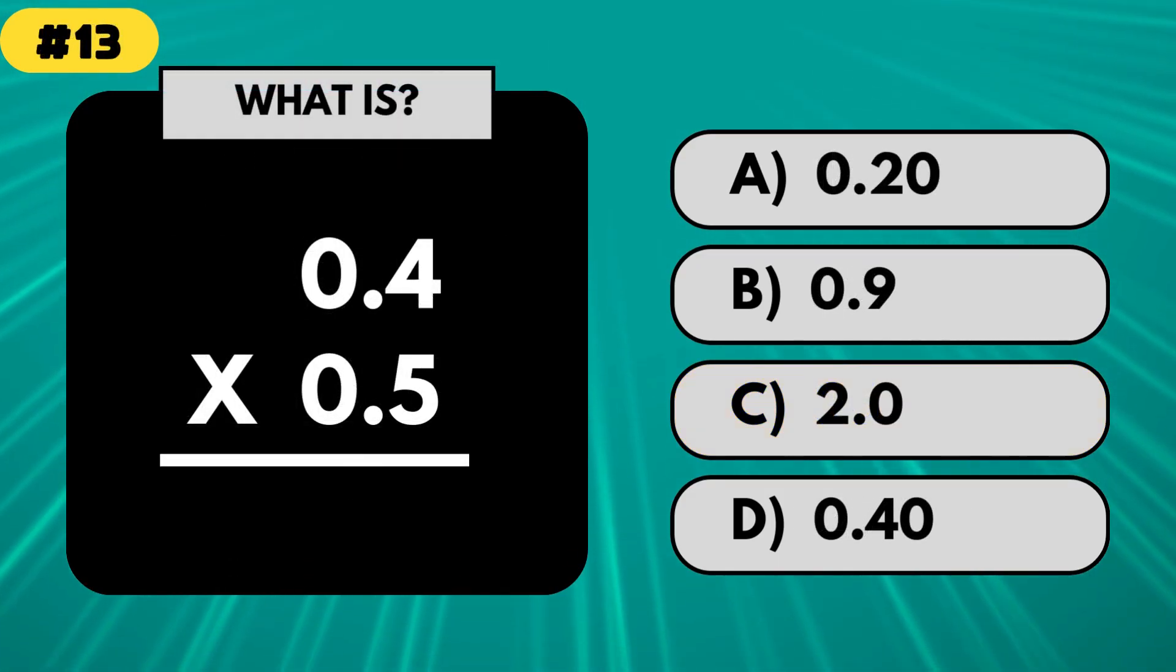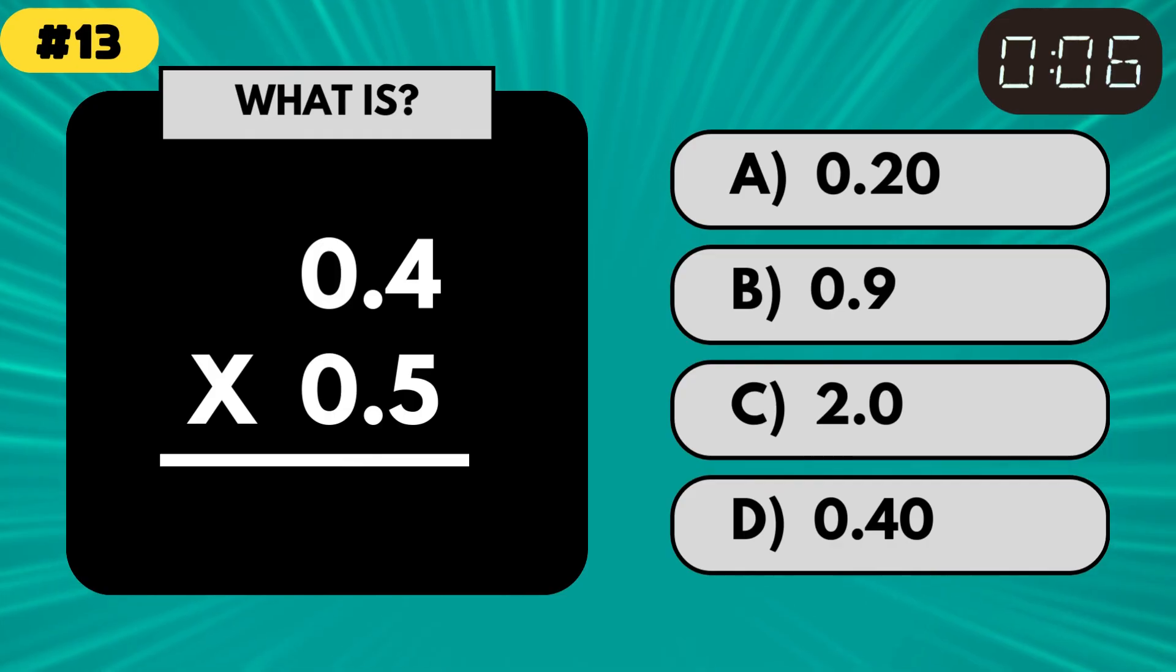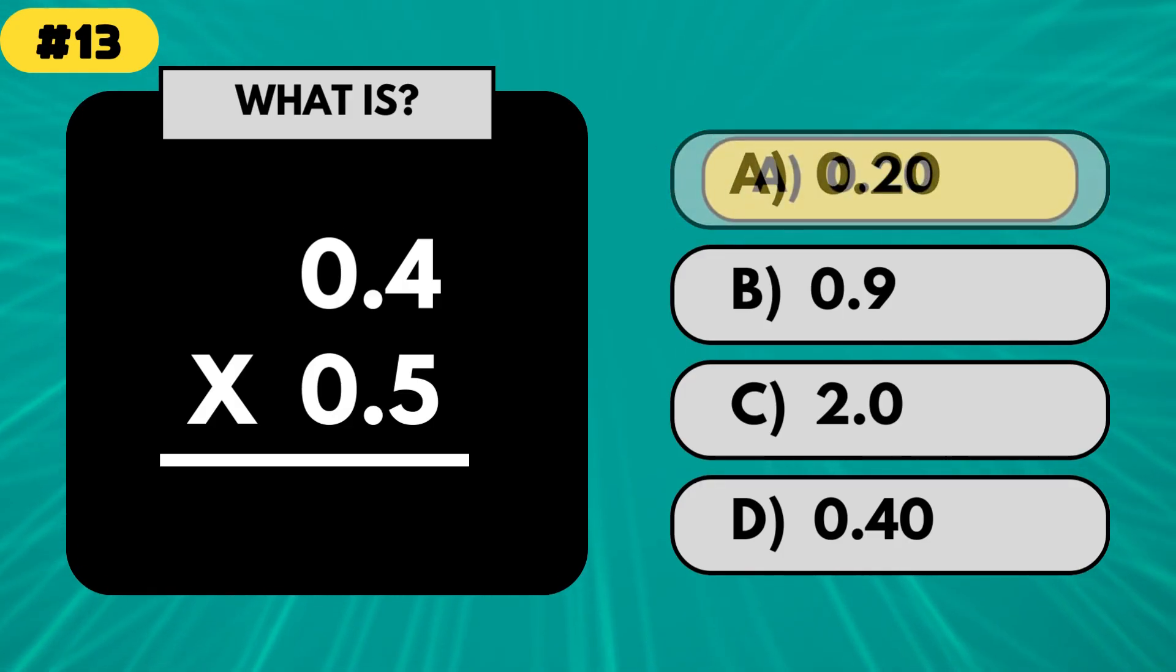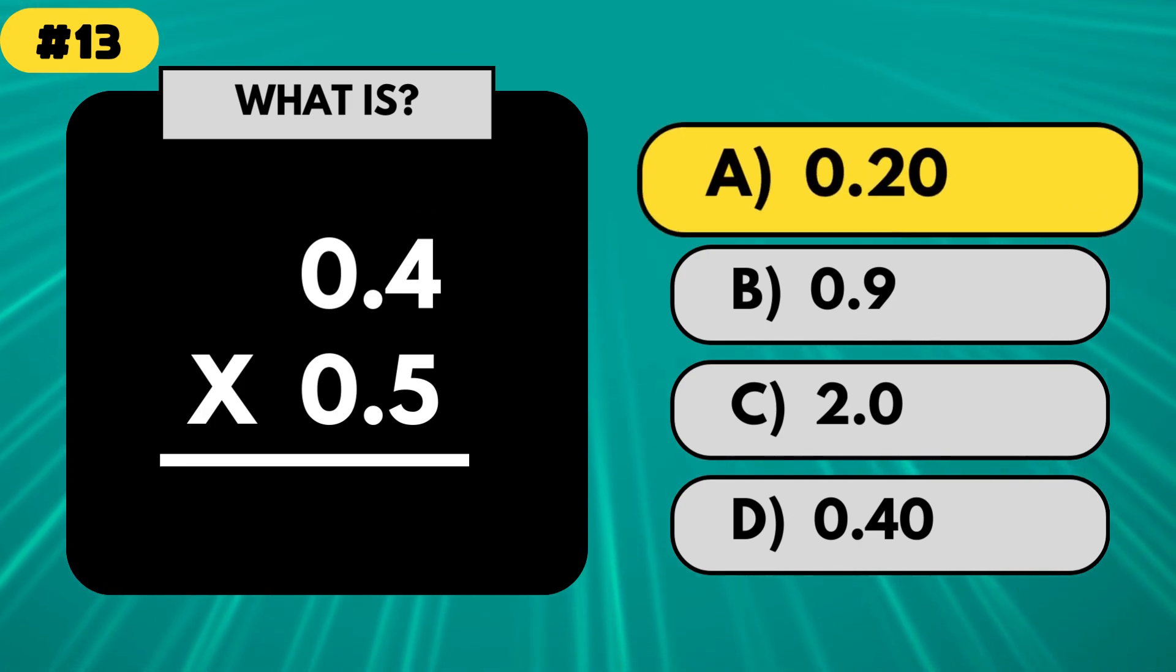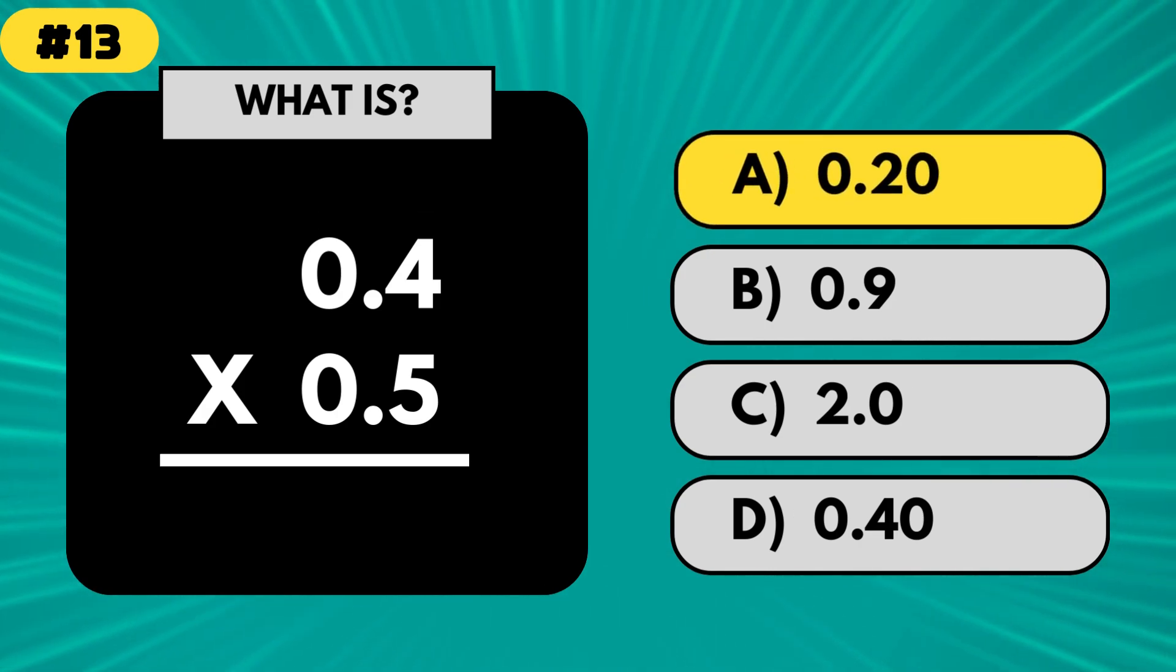What is 0.4 times 0.5? The answer is 0.20. Multiplying decimals can be easier than entangling headphones.